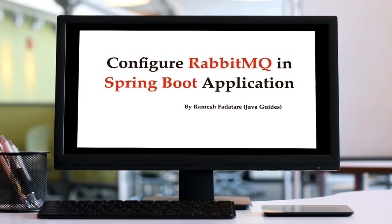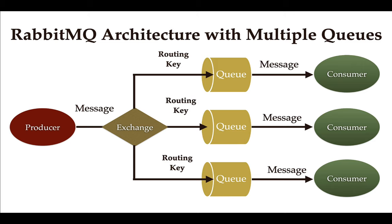Welcome back. In this lecture we'll see how to configure RabbitMQ queue, exchange, and binding in a Spring Boot application. Considering our architecture, we have different components like exchange, queue, and binding using a routing key. To configure RabbitMQ in our Spring Boot application, we need to create these different components: a RabbitMQ queue, a RabbitMQ exchange, and a binding between the queue and exchange.